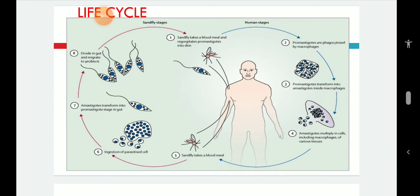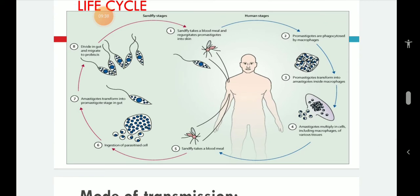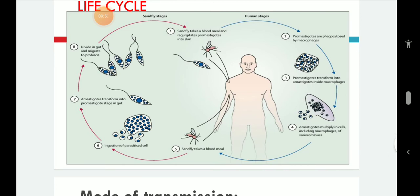Free amastigotes are ingested by the female sandfly during a blood meal from an infected host. In the mid-gut of the sandfly, amastigotes transform within 7 to 72 hours through a series of flagellated intermediate forms into promastigotes. These promastigotes multiply by binary fission, filling the lumen of the gut. After around 6 to 9 days, promastigotes migrate from the mid-gut to the pharynx and buccal cavity, and the bite of the sandfly transmits the infection to a new host.